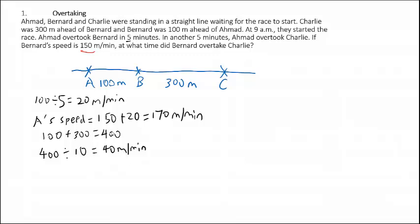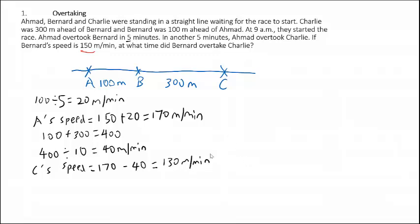Since Ahmad's speed is 170m per minute, to find Charlie's speed, we take 170 minus 40. So Charlie's speed is 130m per minute.